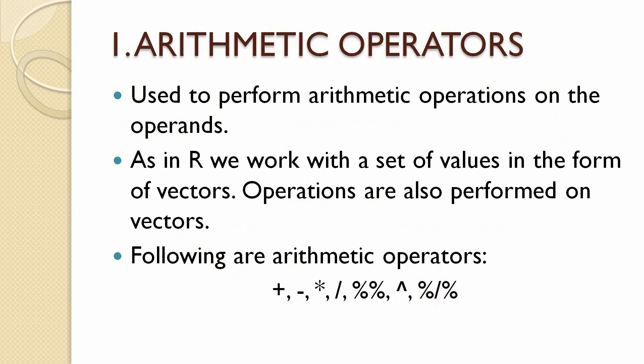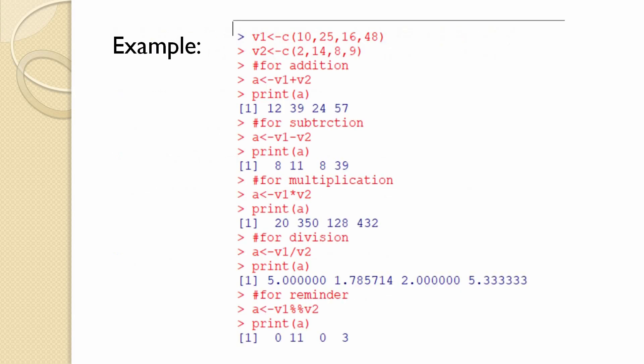The first one is arithmetic operators. The operators which are used to perform arithmetic operations like addition, subtraction, multiplication, division, and so on are called arithmetic operators. In R, arithmetic operations are performed on a set of values in the form of vectors or any other data types. The arithmetic operators supported by R are plus, minus, multiplication, division, double percentile which gives the remainder of the division, caret symbol which gives a variable raised to the power of another, and percentile divided by percentile which gives the quotient on partial division.